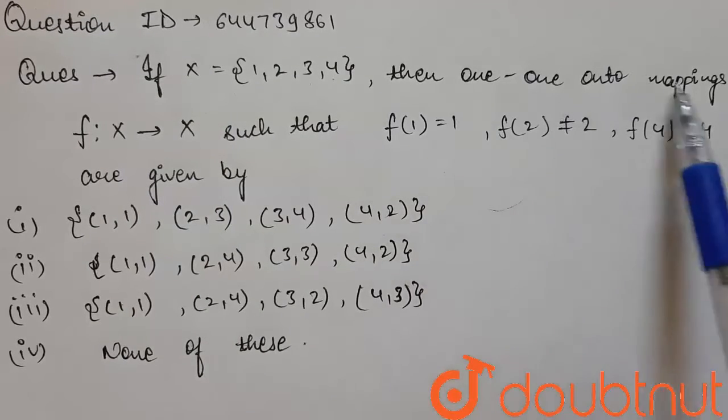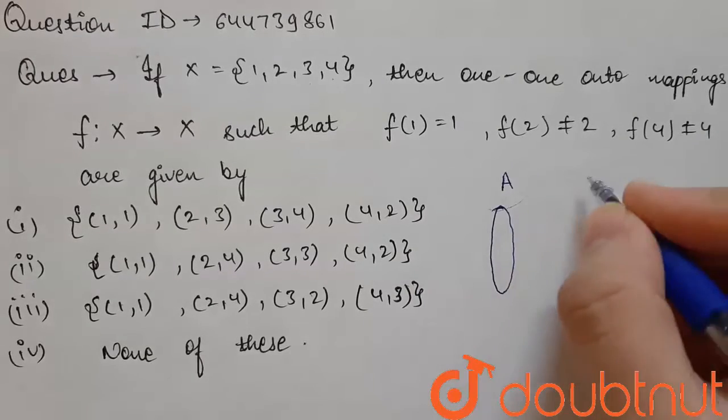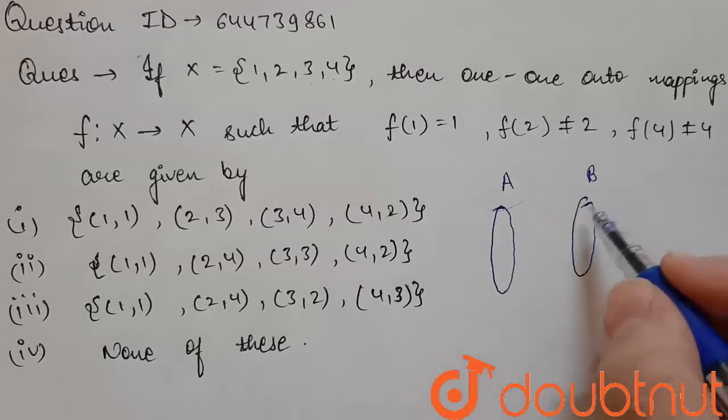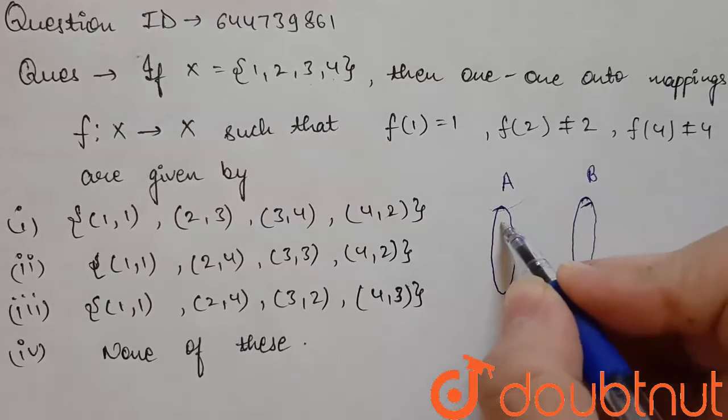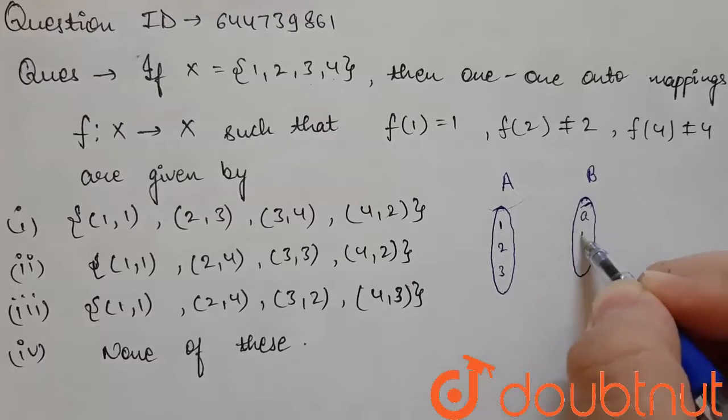We have to do mapping from x the relation x to x, and the mapping must be one-to-one and onto. So let's say if A is a relation given, A and B, these are given. So if A is having the elements 1, 2, and 3, B is having the elements a, b, and c.